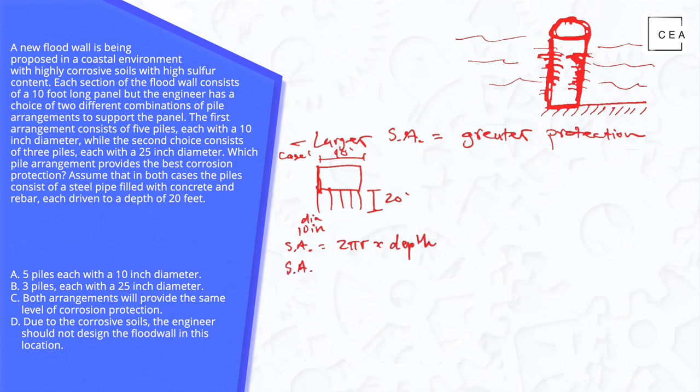Surface area equals 2π. Now, our diameter is 10 inches. The radius is half of the diameter, we know that. But what we need to do is keep consistent units. So we need to convert the inches to feet. So we know it's 5 inches is the radius divided by 12 inches in a foot times 20 feet.